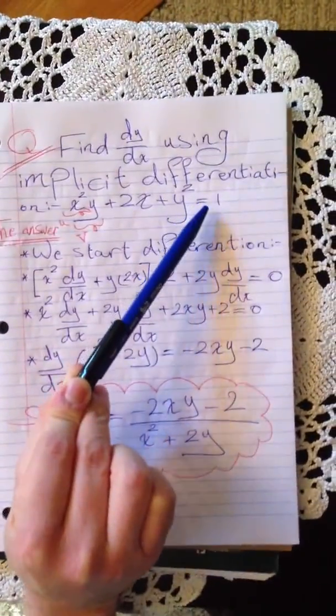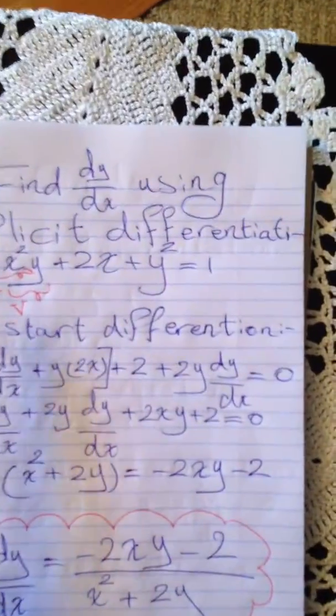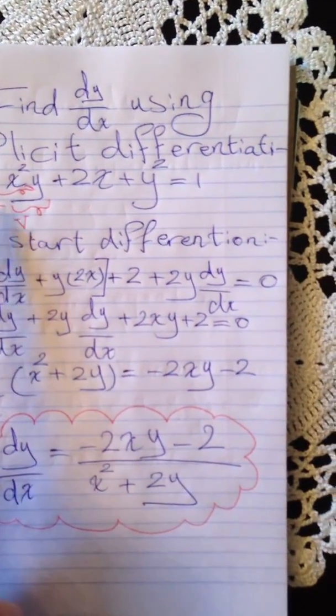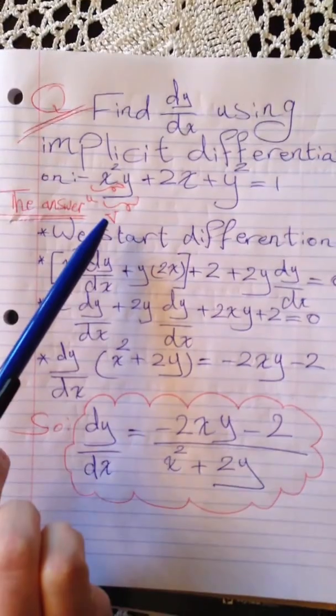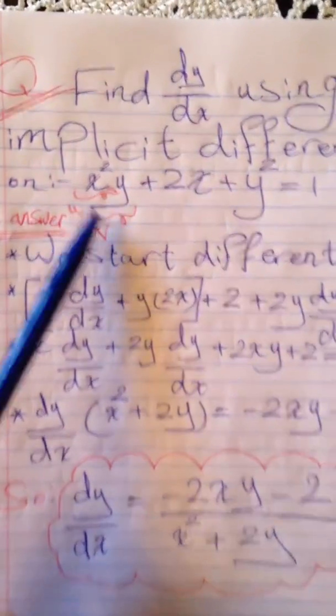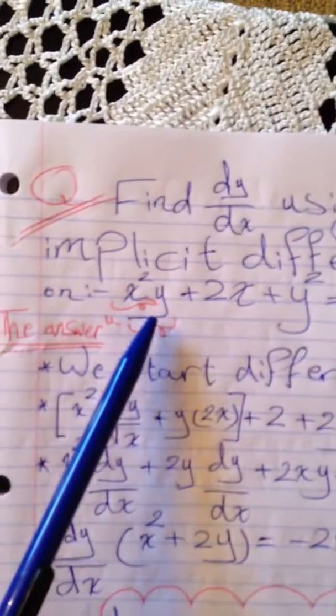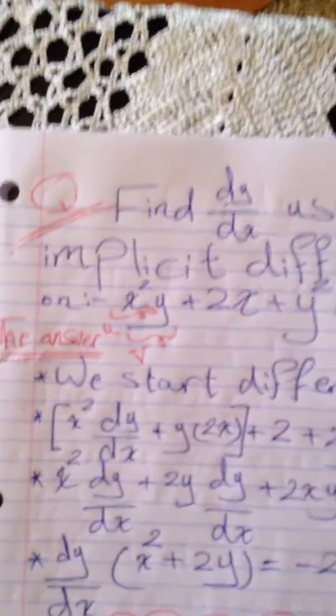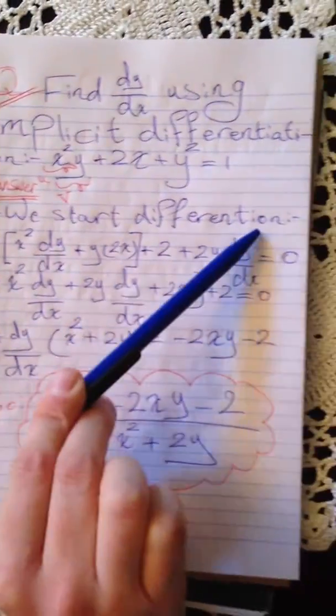If we notice, x²y can be separated into u and v. When we differentiate this term, we will use the product rule. Let's begin the differentiation.